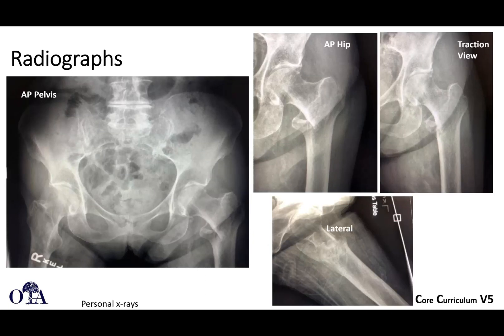For workup, on the left you can see an intertrochanteric femur fracture. With a traction view, you can get a sense of what it might look like if you put the patient under traction on a traction table in the operating room. This can be painful for the patient and may not routinely be needed, but if you have a confusing fracture pattern — for example, a basicervical femoral neck versus an intertrochanteric femur — or if you can't recognize the comminution, sometimes you need a traction view. A good lateral is helpful as well.